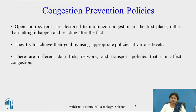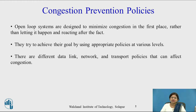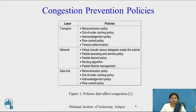Let us see congestion control policies. Open loop system congestion controls are designed to minimize congestion in the first place, rather than letting it happen and reacting after the fact. They try to achieve their goal by using appropriate policies at various levels. There are different data link, network, and transport layer policies that can affect congestion. Let us see these policies.